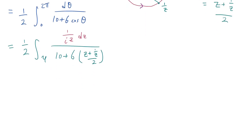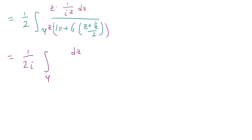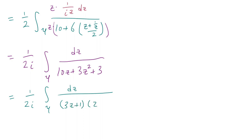Bringing the 1/iz outside and multiplying z through the numerator and denominator to clear the 1/z term, and distributing everything, gives 1 over 2i times the integral along gamma of dz divided by 10z plus 3 times (z squared plus 1), which simplifies to 10z plus 3z squared plus 3. This factors as 3z squared plus 10z plus 3 equals (3z plus 1)(z plus 3).